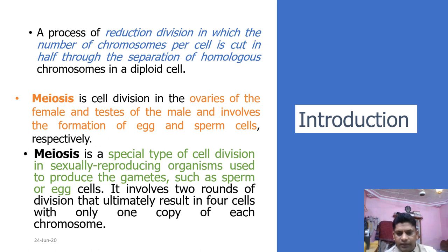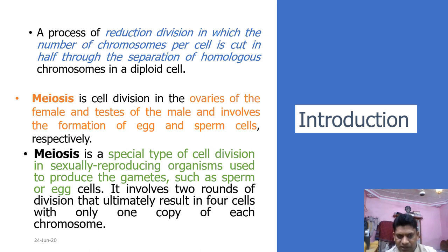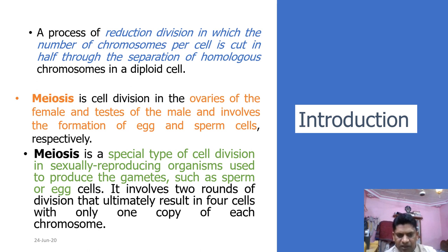First, we are going to define Meiosis. Meiosis is the type of cell division which is usually known as a reduction cell division, because the number of chromosomes per cell is reduced to one half of the original number through the separation of homologous chromosomes in diploids. This is the type of cell division which reduces the cell to one half, producing another haploid cell.